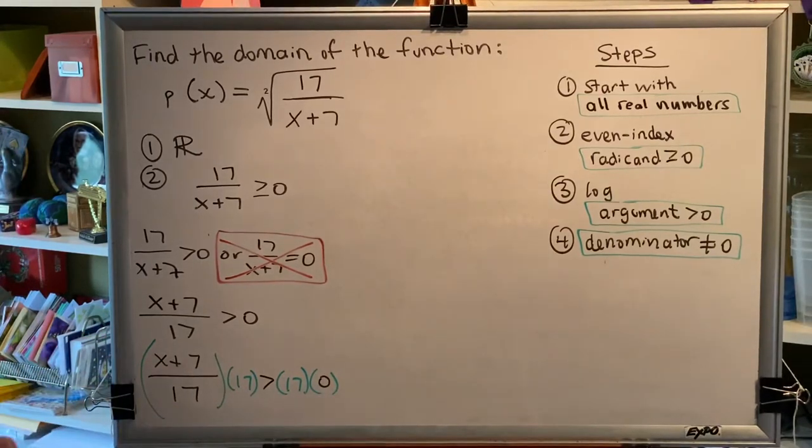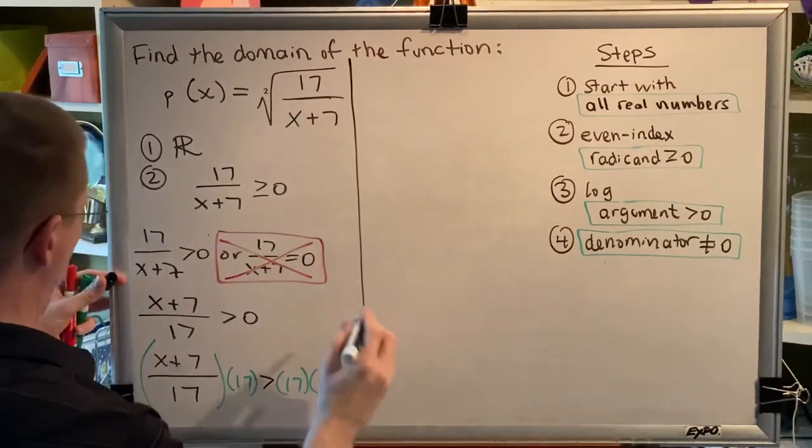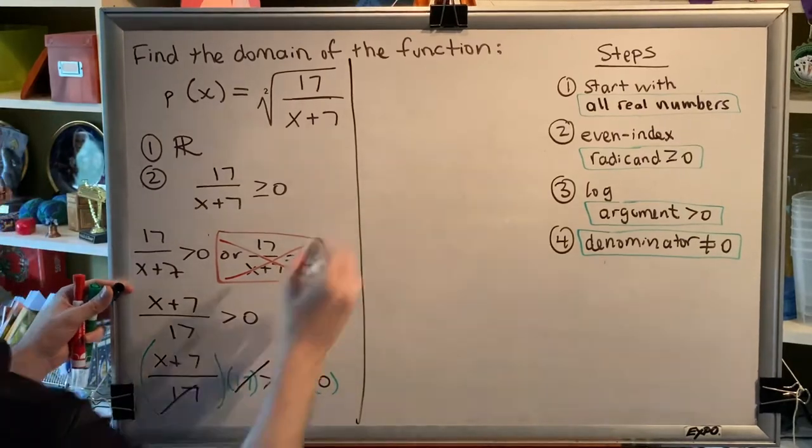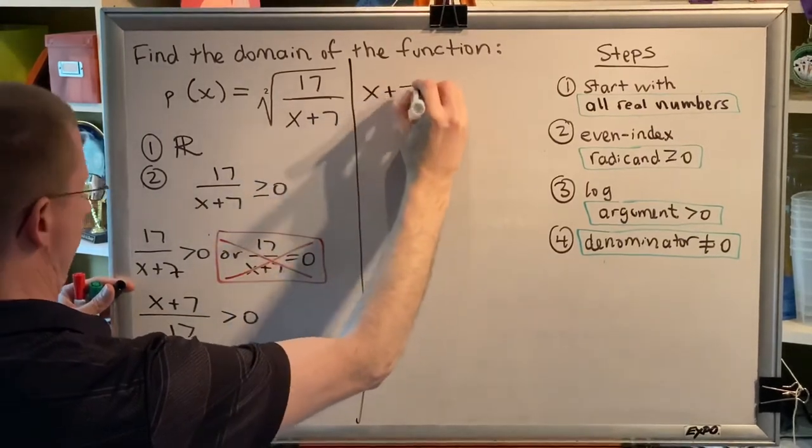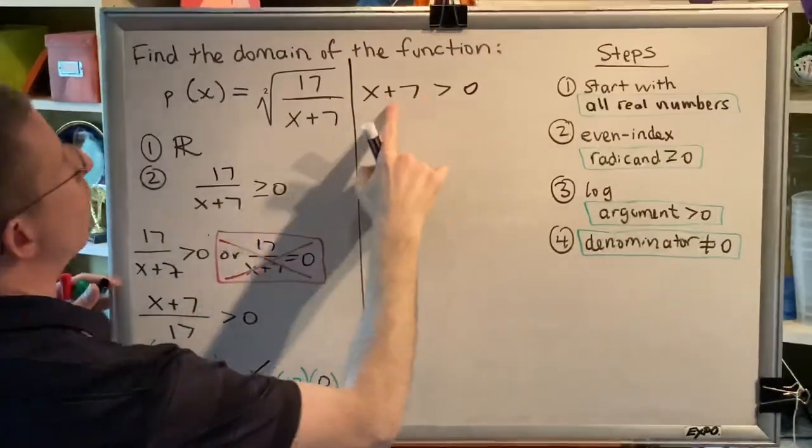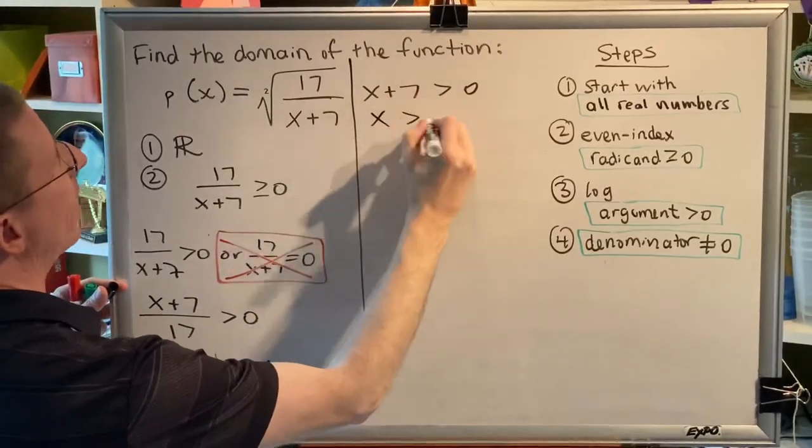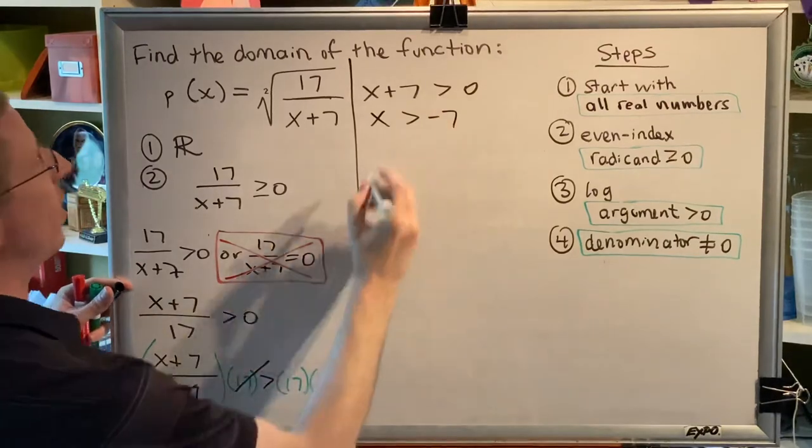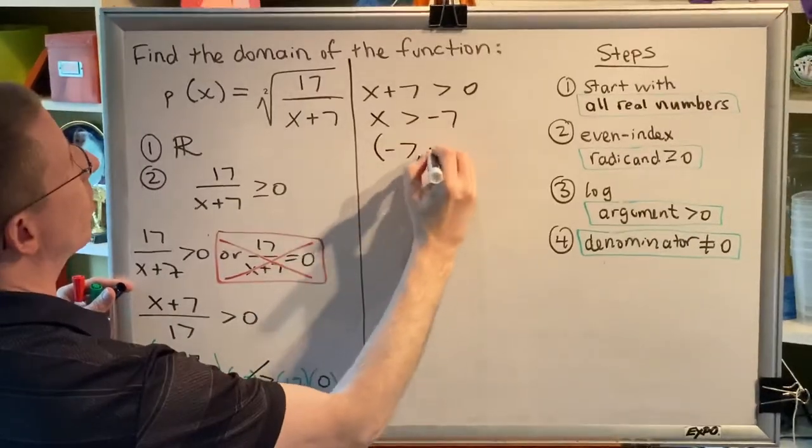So now we get the new statement. The 17's cancel. So, x plus 7 is greater than zero. Moving the plus 7 to the other side, we get x is greater than negative 7. Which, as an interval, is negative 7 comma infinity.